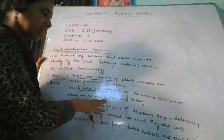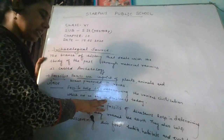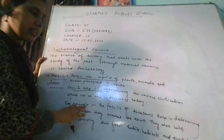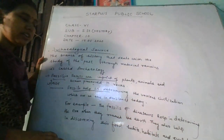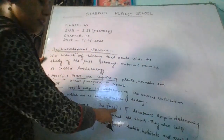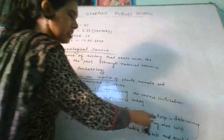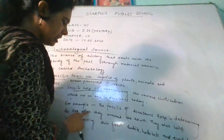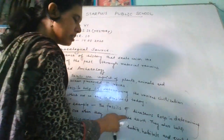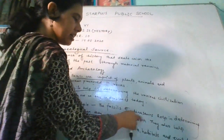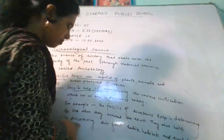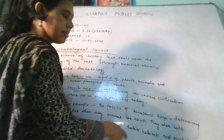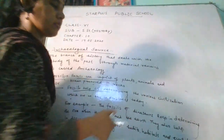For example, fossils of dinosaurs help in determining the era when they roamed the earth. They also help in discovering their food habits, habitats, and evolution.